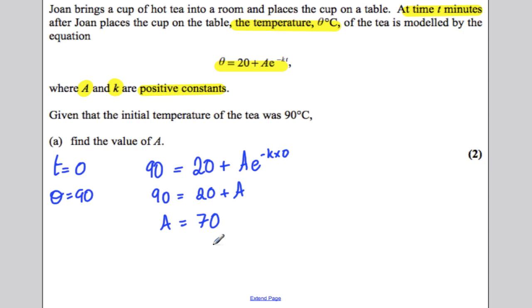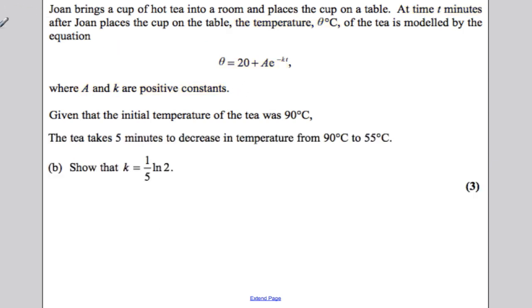And that is part A done. A is equal to 70. Now, part B. We now know, let's just rewrite our equation. Theta, therefore, we can write this more accurately as 20 plus 70e to the negative Kt. We now have found A.